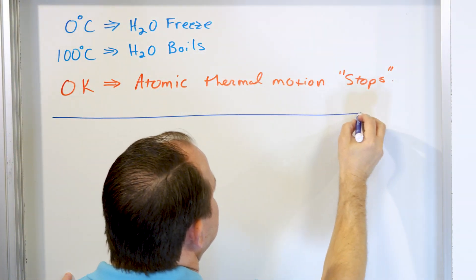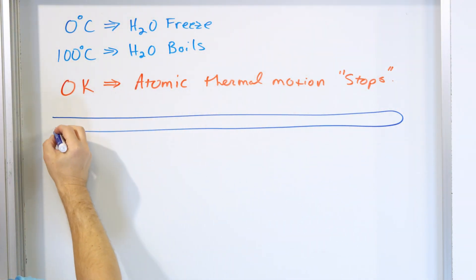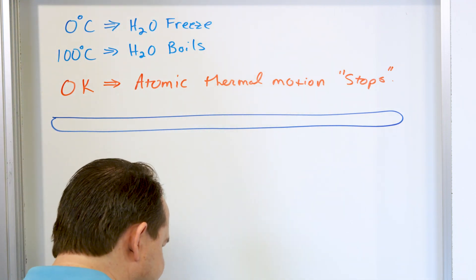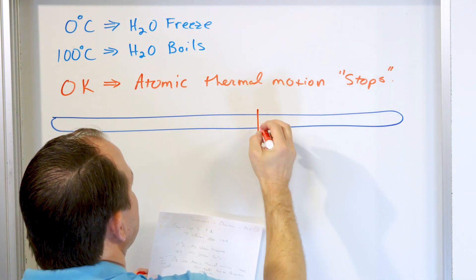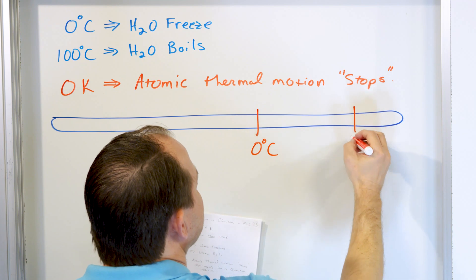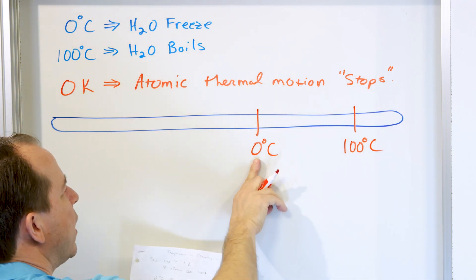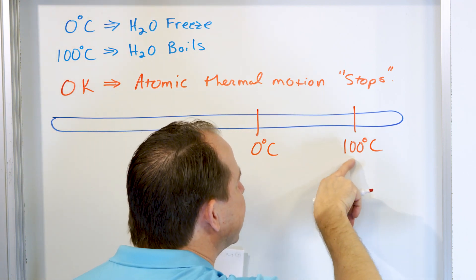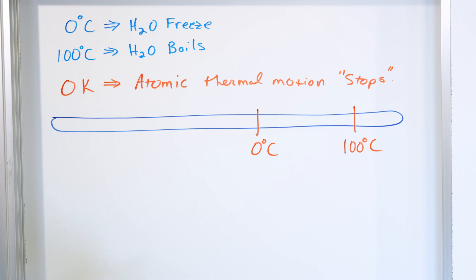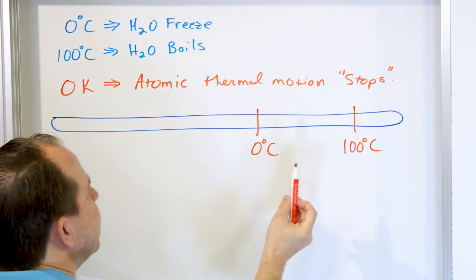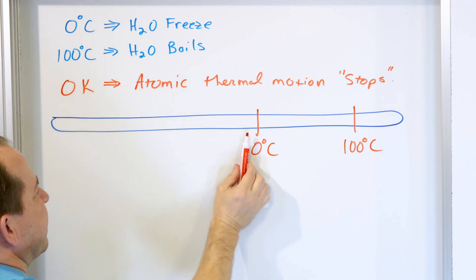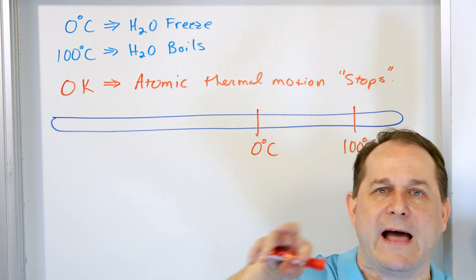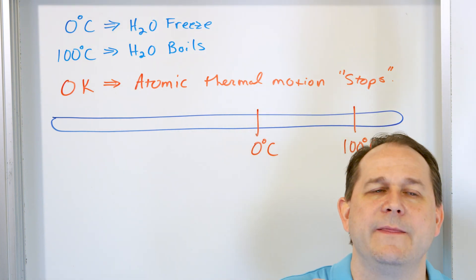Let's draw a thermometer that goes something like this — yes, it's a hokey looking thermometer. Higher temperature is this way and lower temperature is this way. We're going to draw a Celsius thermometer. Somewhere up here is what we call zero degrees Celsius, and somewhere over here is called 100 degrees Celsius. Here is where water is going to freeze or begin to melt if you're warming it up. And when you continue heating it up, it's going to get to 100 Celsius and start to boil. That's the Celsius temperature scale.